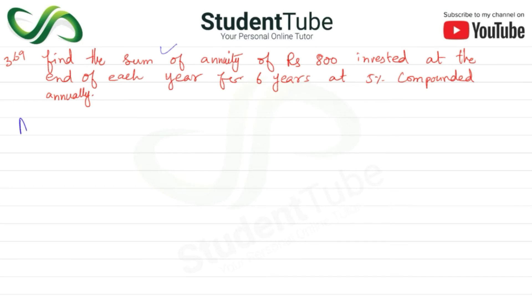Find the sum of annuity means we have to find the future value. The future value formula is: FV = R × [(1 + r)^n − 1] / r.